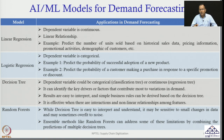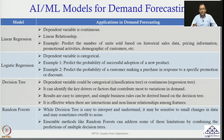Another model is random forest, which is an extension of decision tree. While decision tree is easy to interpret, it may be sensitive to small changes in data and may sometimes overfit to noise. Ensemble methods like random forest can address this limitation by combining the predictions of multiple decision trees. Random forest may remove the possibility of overfitting, which is why many people prefer it over a single decision tree.